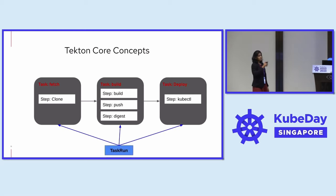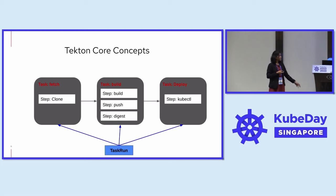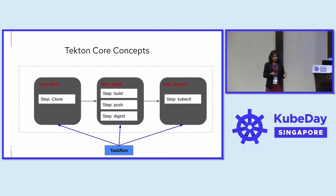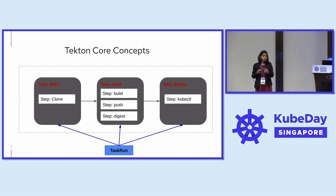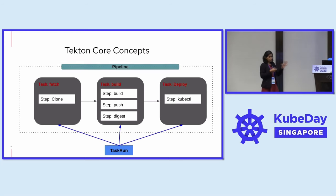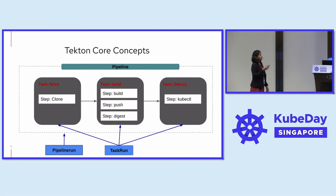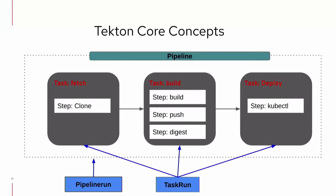Tasks are just static templates. In order to instantiate those resources, we have a resource called task run. Tasks can be run individually, but if I have a scenario with multiple operations, just like in Kubernetes we don't run pods alone but use a deployment, similarly in Tekton it is recommended to have a pipeline — a set of tasks — and run that pipeline using a resource called pipeline run. So a task is a template that can have multiple steps, a pipeline is a template that can have multiple tasks, and to run those resources we have pipeline run and task run.